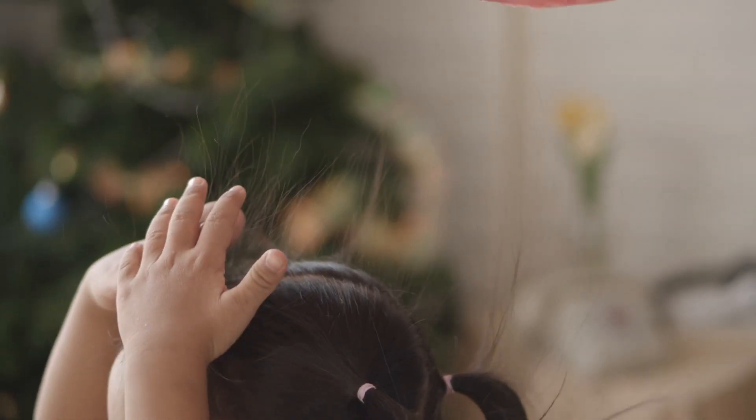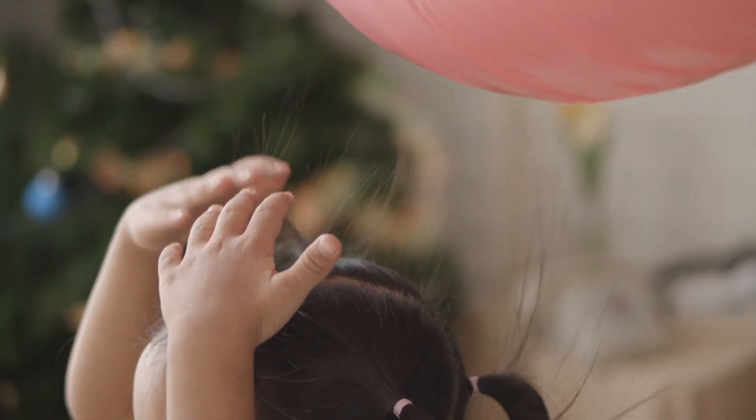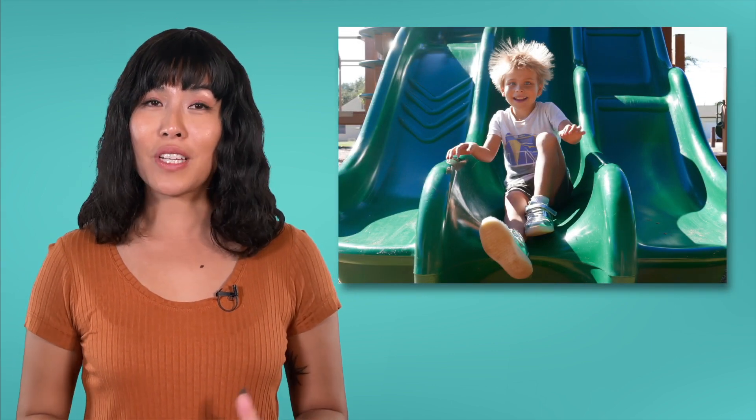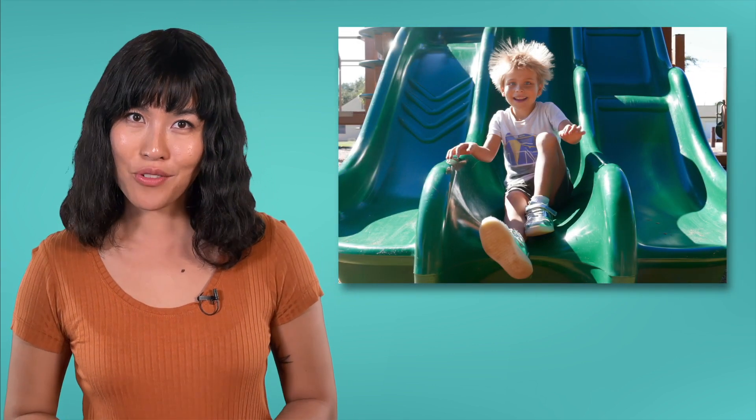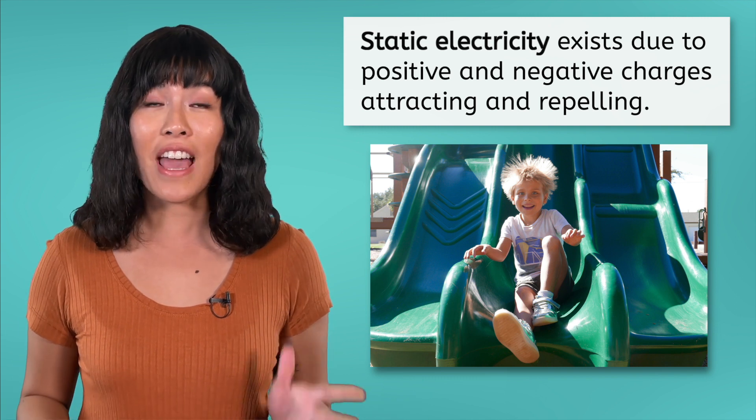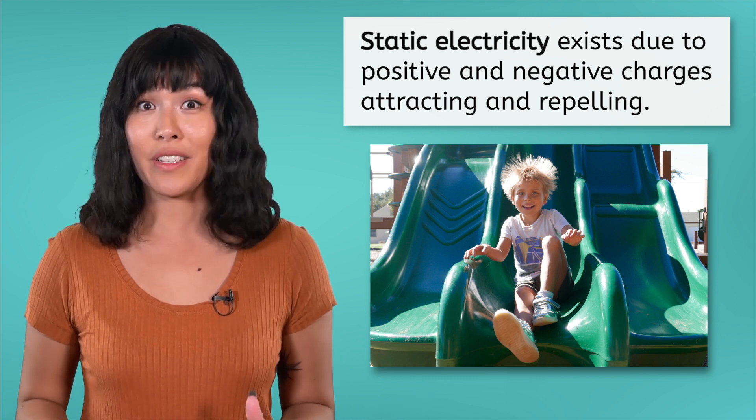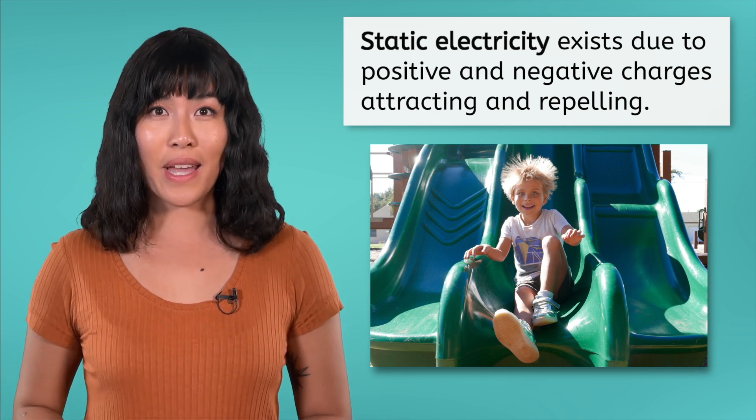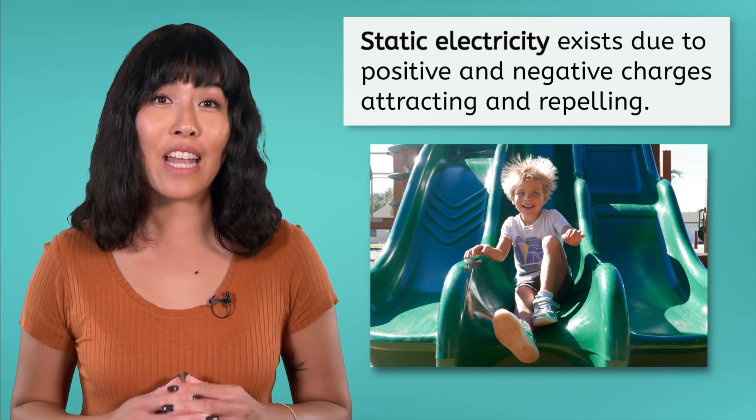Of course, it doesn't only work on cats. Grab a balloon and you can do the same thing to your own hair. In the lesson PDF activities, you'll explore this phenomenon further and find out which materials are capable of producing static electricity and why. For now, know that static electricity exists any time we have positive and negative charges, which are really just protons and electrons. These charges will always obey nature's rule about attracting and repelling.